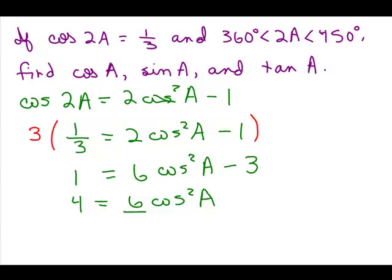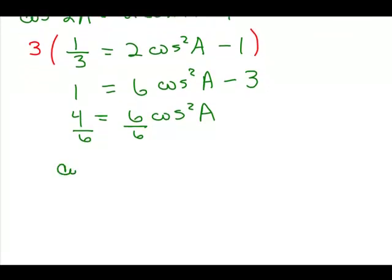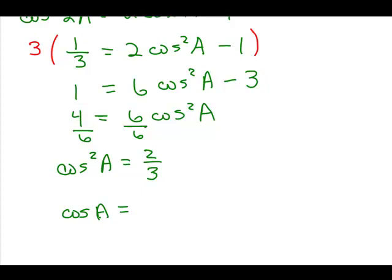Dividing both sides by 6, we get cosine squared a equals 2/3. Now here's where the trick comes in. We take the square roots of both sides, but we have to decide the sign. Usually you put plus or minus, but we know the cosine of this particular angle a in this problem can't be two different answers.